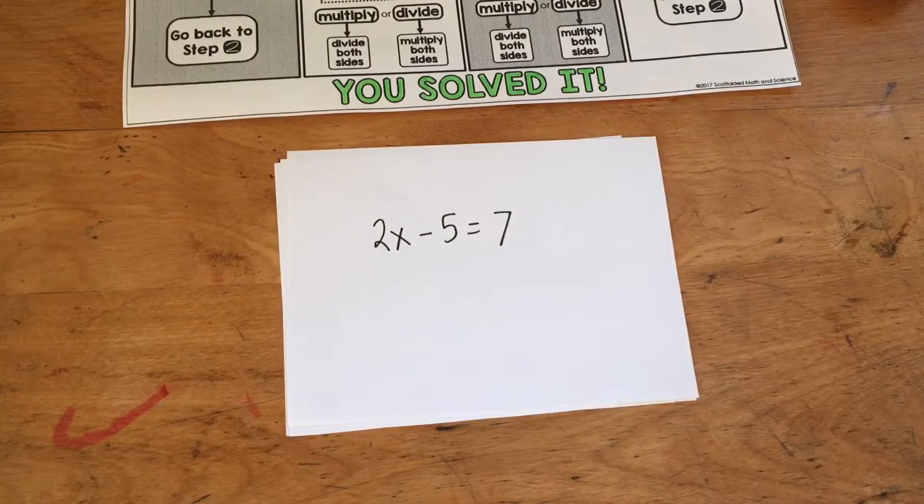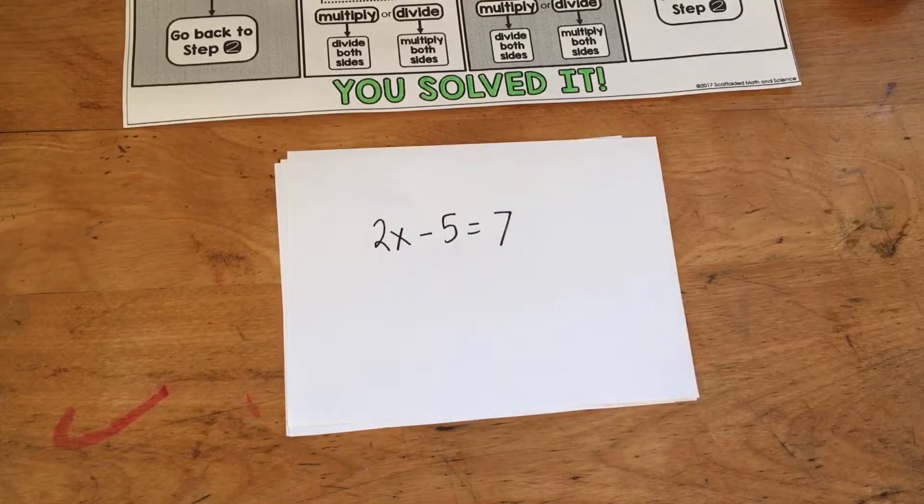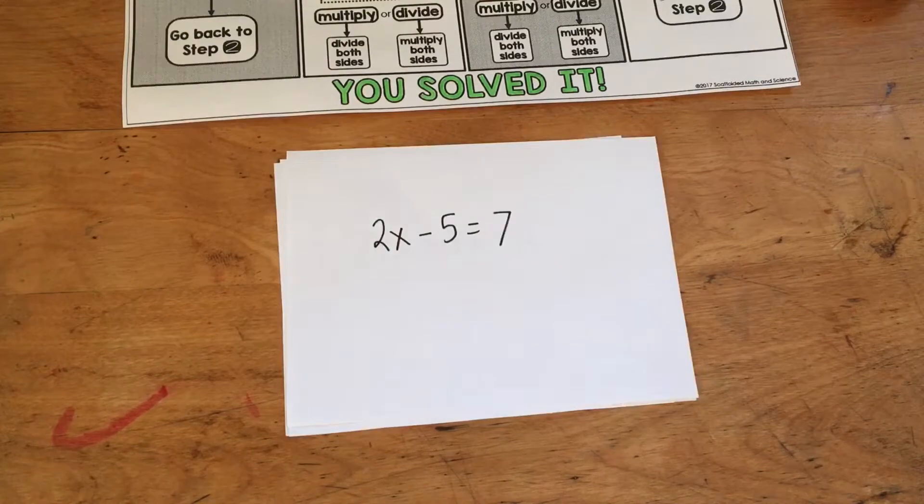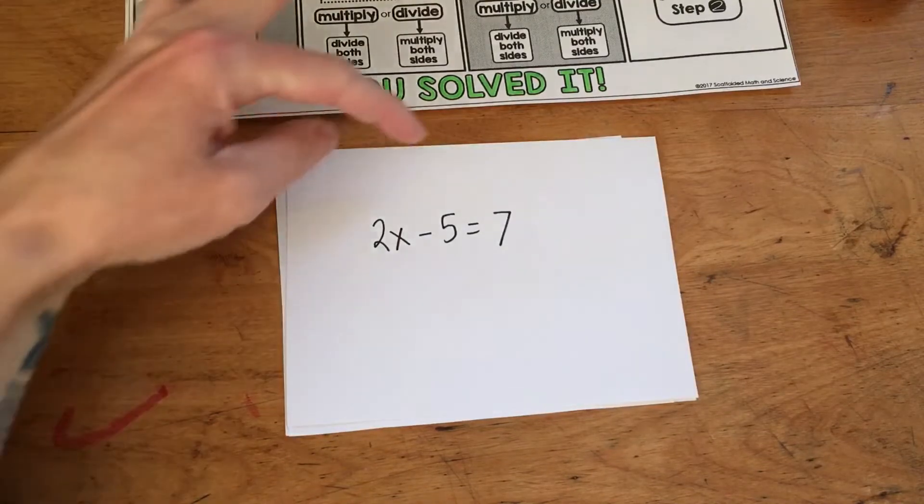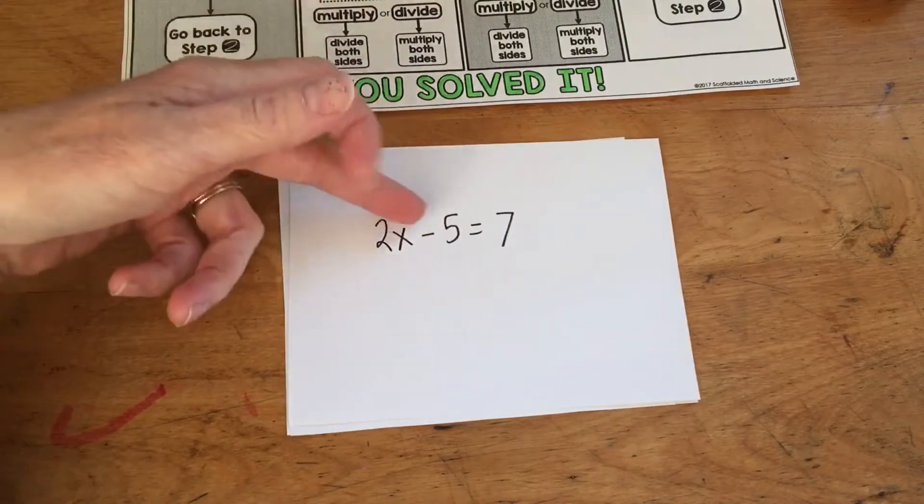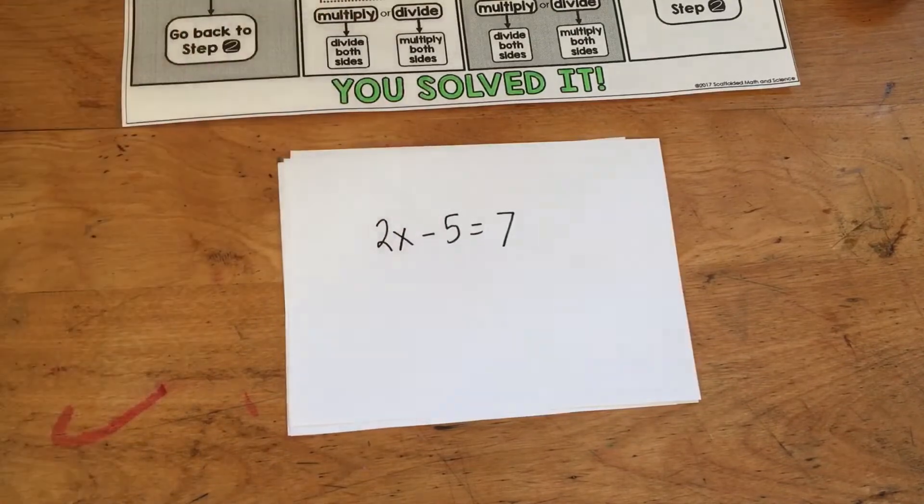Or if they don't really know what a term is, I can say which side of the equal sign has either adding or subtracting happening. They'll always know that 2x minus 5, they can see that there's subtraction happening on that side.